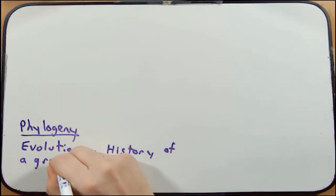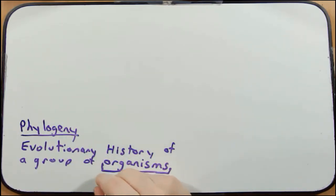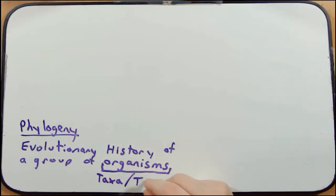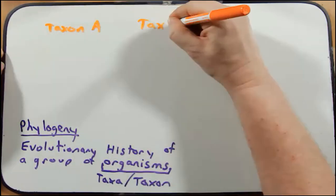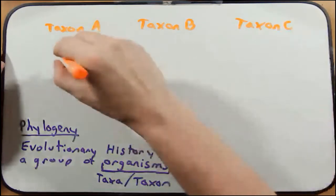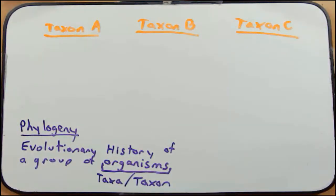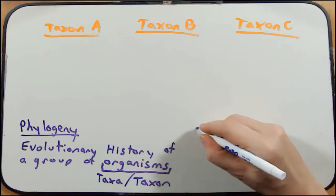Someone who is interested in systematics is going to be interested in phylogeny. A phylogeny is the evolutionary history of a group of organisms. This group of organisms we're going to call taxa — that's the plural form; the singular form is taxon. Taxa or taxon simply refers to any organism in a classification scheme. Someone studying phylogeny is interested in the evolutionary relationship between taxon A, taxon B, and taxon C — how these three organisms, or taxa, are related to each other from an evolutionary history perspective. To understand that relationship, they will often build a phylogenetic tree.